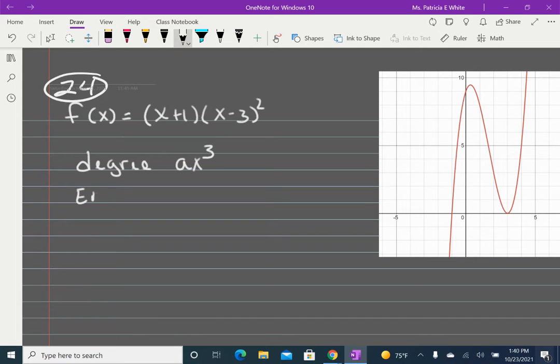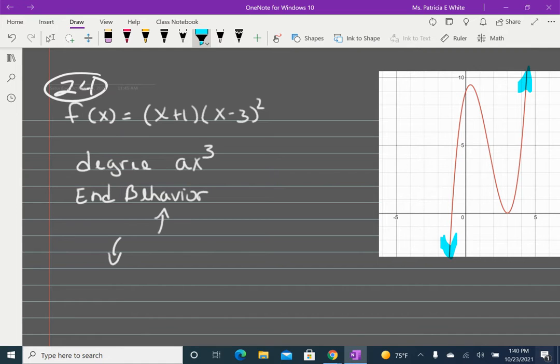The first piece of information that gives me is my end behavior. Positive and odd gives me right side up, left side down. Right is going to positive infinity, and left side is going to negative infinity. And I went ahead and I put this into Desmos. If you are practicing on some of these problems out of your textbook, you might want to pull up Desmos.